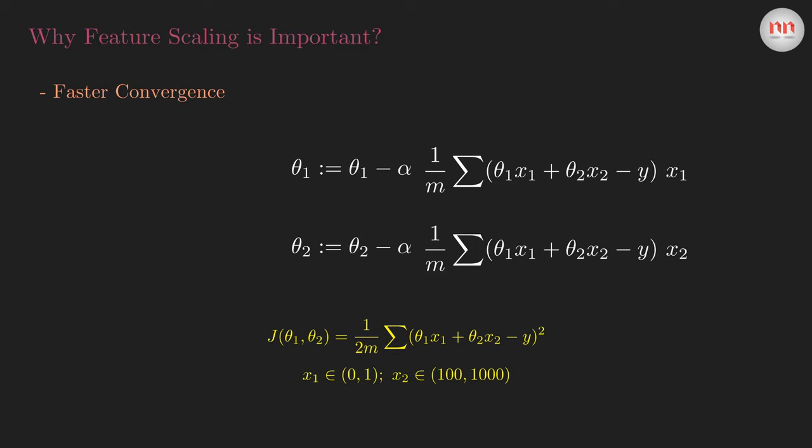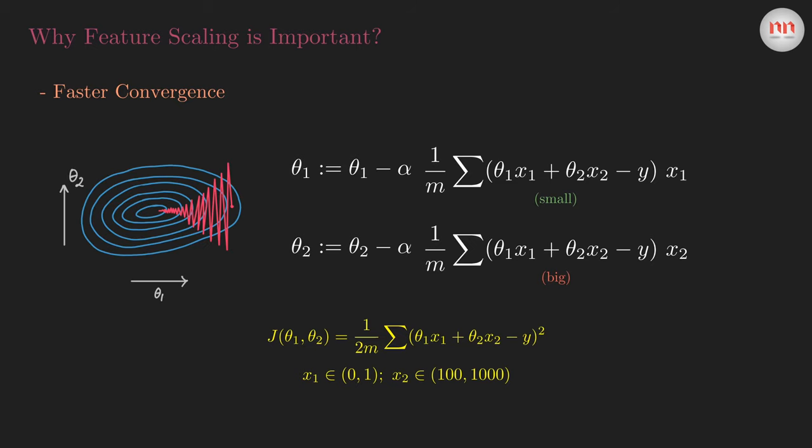Due to the small value of x1, the step size for theta1 will be small. On the other hand, as x2 is huge, the step size for theta2 will be large. And this difference between the step sizes can cause unwanted oscillations during the optimization and delay the convergence.